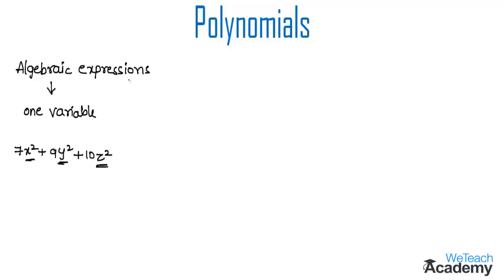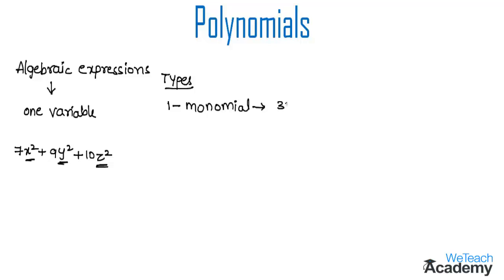We have also learnt the different types of algebraic expressions. The first type is a monomial expression. A monomial expression is an expression containing only one algebraic term. Examples are 3x squared y and qz squared.